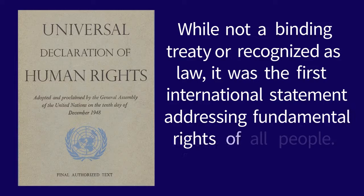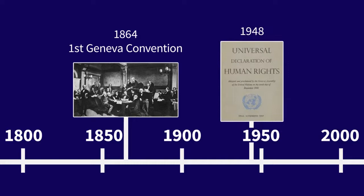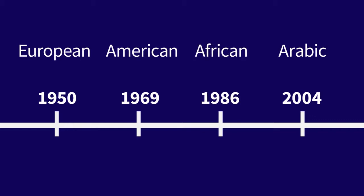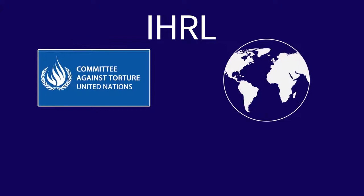Similarly, as the first Geneva Convention was written to address the suffering of soldiers in time of war, the Universal Declaration of Human Rights was drafted in response to the brutal treatment of civilians during World War II and recognized that everyone should be entitled to certain rights. Since that time, several regional conventions on human rights have emerged, such as the European Convention on Human Rights, Arab Charter on Human Rights, American Convention on Human Rights, and African Charter on Human Rights and Peoples' Rights. More recently, IHRL has been advanced through international treaties such as the United Nations Convention Against Torture. While these treaties have global application, they are focused on protecting certain specific rights rather than taking a comprehensive approach to addressing all human rights.